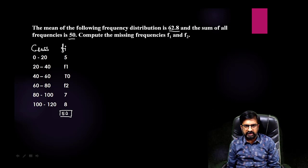Let me tell you, here sum is already given to you and two missing frequencies are also there. So if you will add this, 5 plus 10 is 15, 15 plus 7 is 22, 22 plus 8 is 30, plus f1 and plus f2 equals to 50.